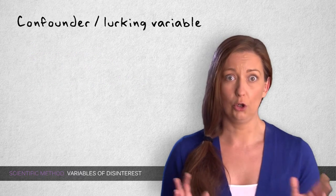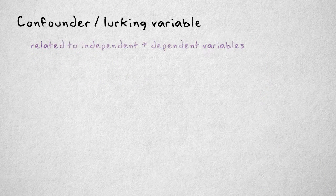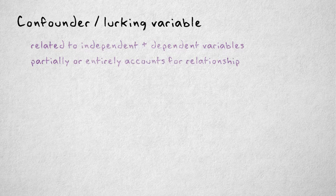A confounder, or lurking variable, is a variable that is related to both the independent and dependent variable, and partially or even entirely accounts for the relationship between these two.